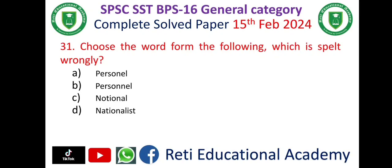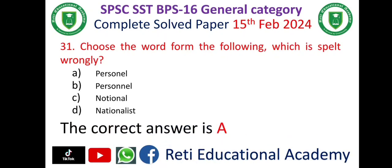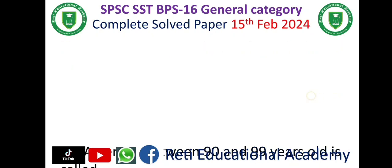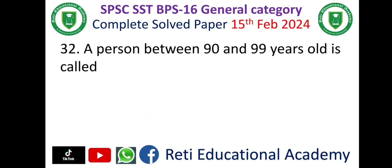Question number thirty-one: Choose the word which is spelled wrongly. A. Personal (P-E-R-S-O-N-E-L), B. Personal, C. Notional, D. Nationalist. The word with the wrong spelling is A — 'Personel' is incorrect. Question number thirty-two: A person between 90 and 99 years old is called — the correct answer is B, Nonagenarian.